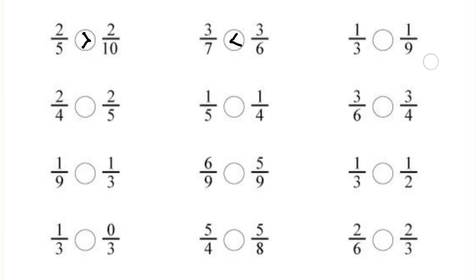In the next question, 1 by 3 and 1 by 9 — again the numerators are same. So the fraction with the smallest denominator has the greater value. So 1 by 3 is greater than 1 by 9, and we have to put the greater sign in the circle. In the next question, 2 by 4 and 2 by 5 — again numerators are same. So 2 by 4 is greater than 2 by 5 because the fraction with the smallest denominator has the greatest value when the numerators are same.